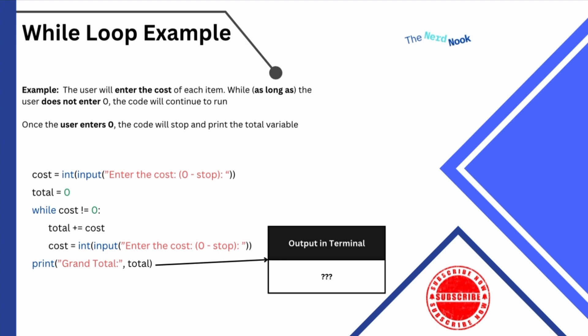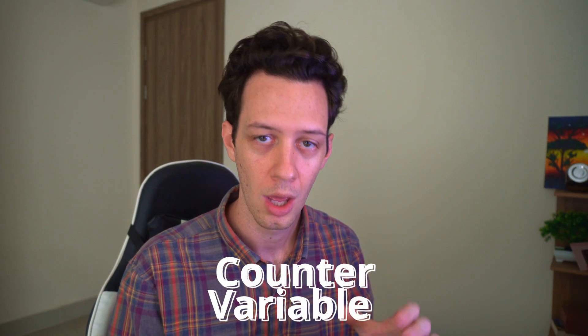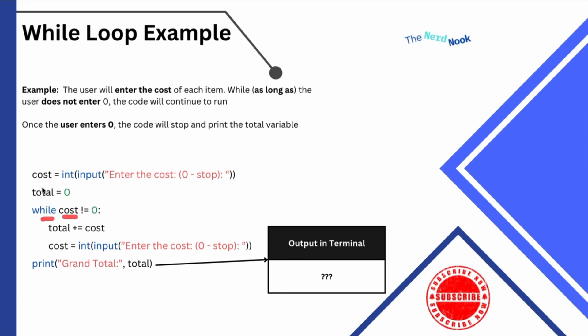The user is going to continue to enter a cost or the price of each item. While the user does not enter zero, the loop repeats. Once the user enters zero, the loop stops and it's going to print the sum of all the numbers entered. Outside the loop I have two variables: an input collecting the number and converting it to an integer, and then total set to zero. Total is what's known as a counter variable — I'm going to use it to add things every time my loop runs. So while my input cost is not equal to zero, every time the loop runs it's going to take the total and add whatever was entered.